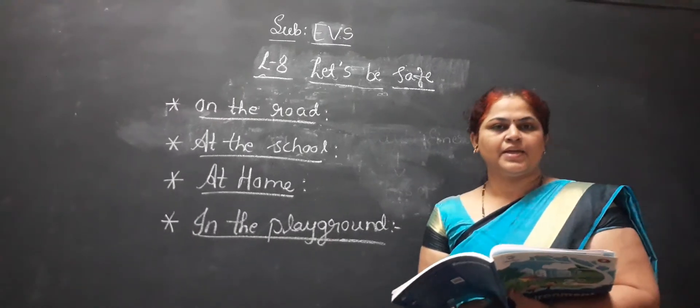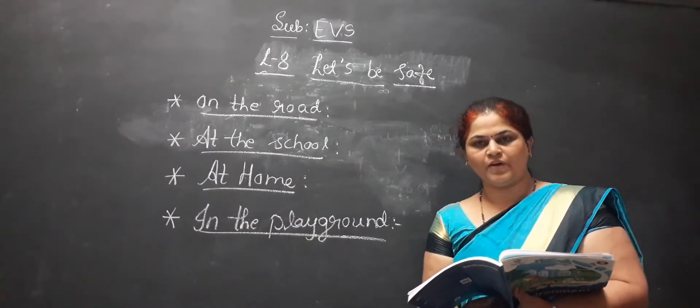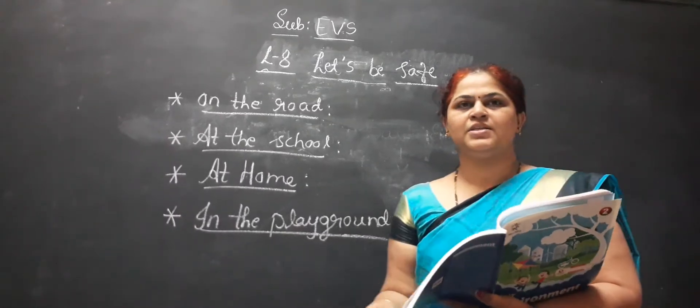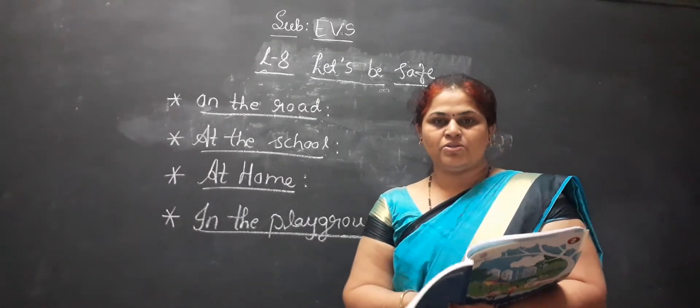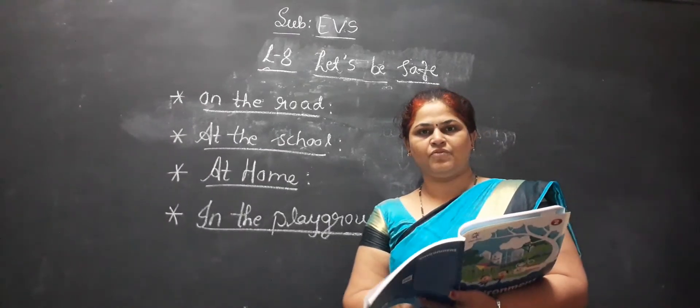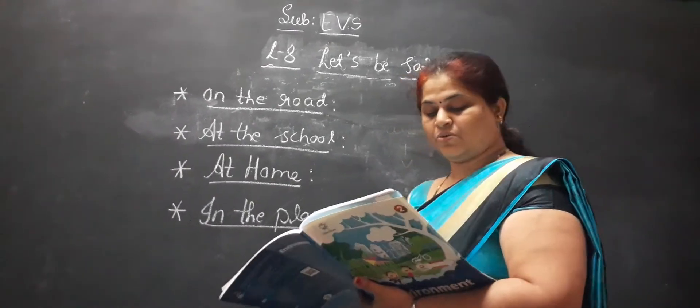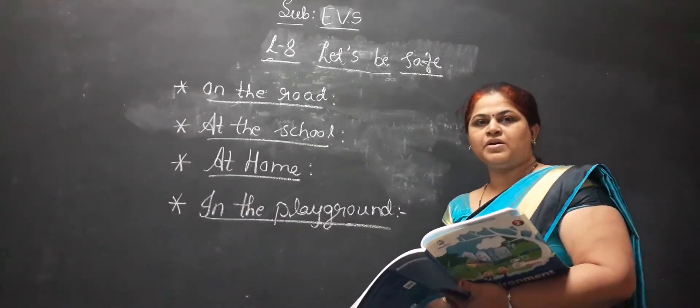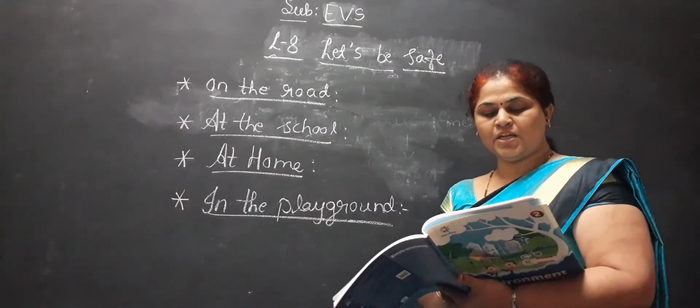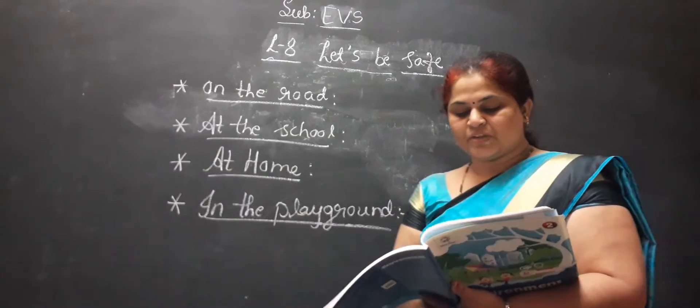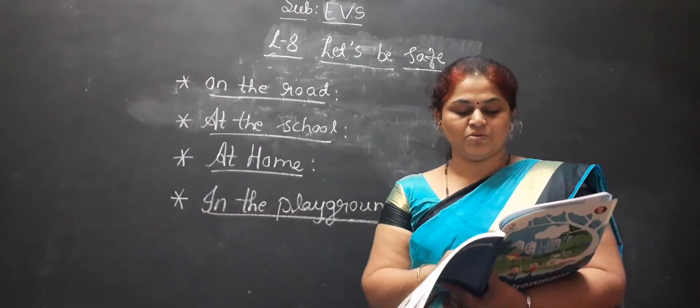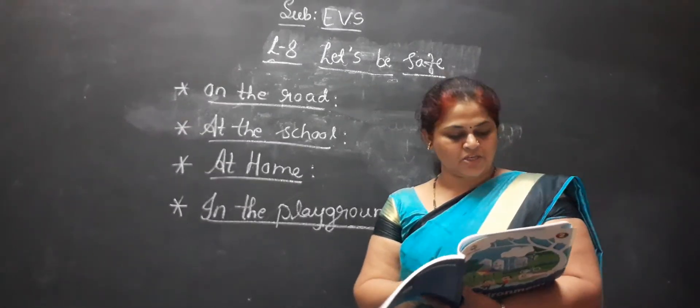So accidents, it can happen anywhere, at home, while playing on the road or while traveling. All these accidents, how you can be avoided? You have to be careful and follow some safety rules. These will keep us and help us stay safe. We have to follow some rules to avoid these injuries.